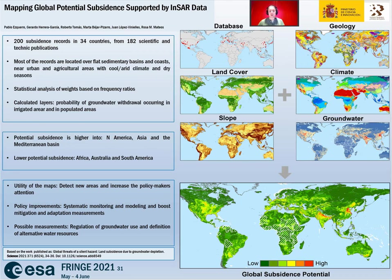It is important to say that the model calculates the probability that subsidence could happen, not that it is currently happening. Regarding the limitations, the higher probability does not imply higher magnitude. In order to calculate magnitude, specific data on piezometric levels and soft soil thickness are very important and difficult to obtain as global layers.